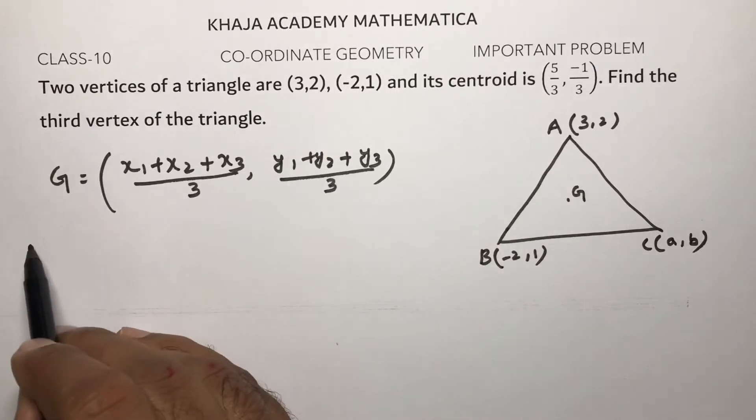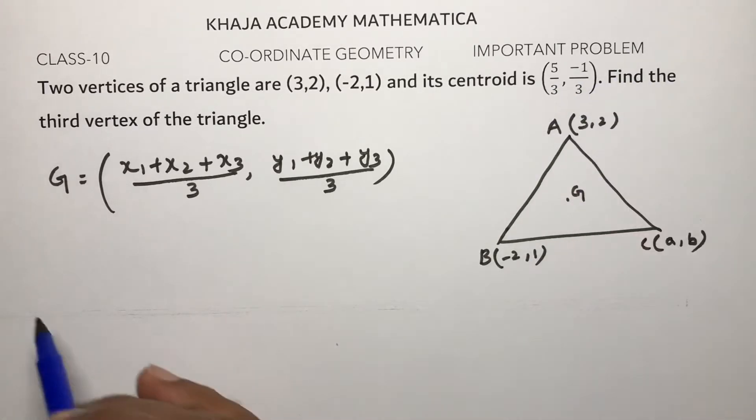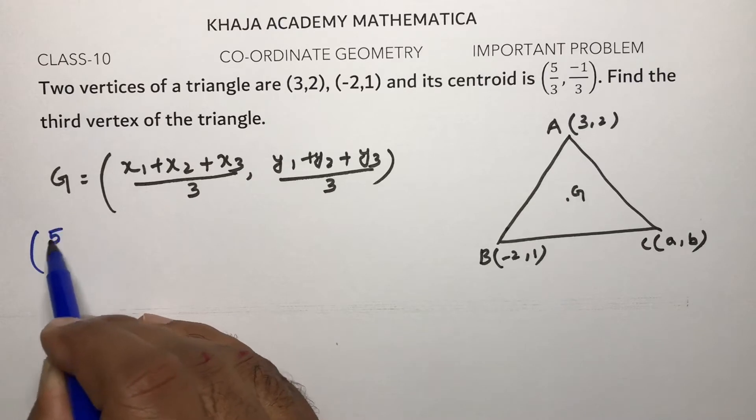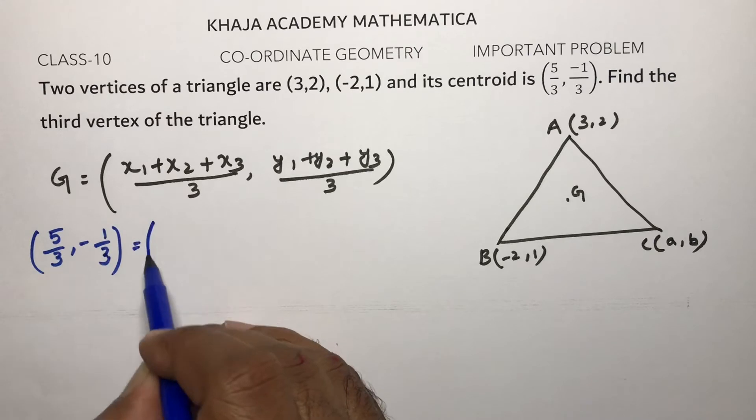Centroid value is here 5/3, they give centroid value as (5/3, -1/3). 5/3, -1/3.